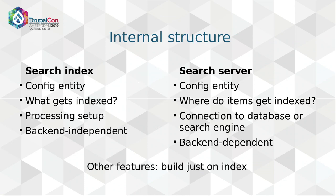The internal structure consists of two config entity types. A search index defines the kind of items you want to index in search — like content, media, or user profiles — which fields you want to index, how this should be processed, and all of that is completely backend independent. The server gives you the definition of where the data will be stored and retrieved during searches, so this is the backend-dependent part which connects to the database, Solr, or Elasticsearch. The idea is that all other modules built on top of Search API just reference the index, so if you later switch out the backend, things will keep working the same.